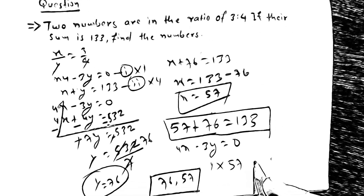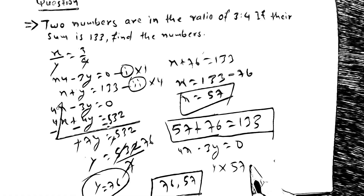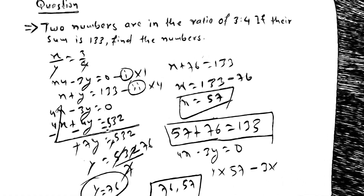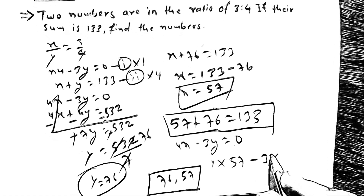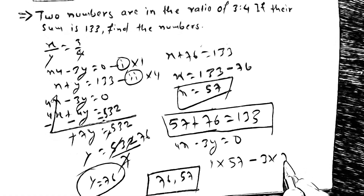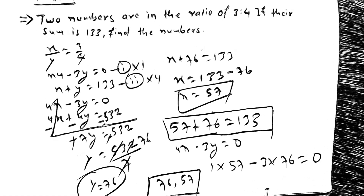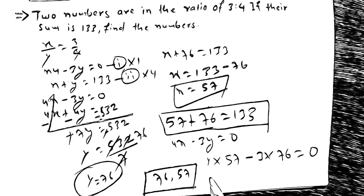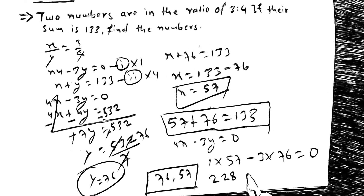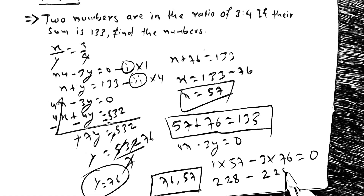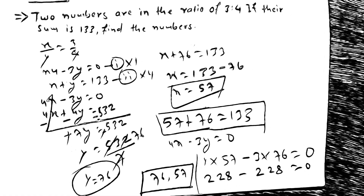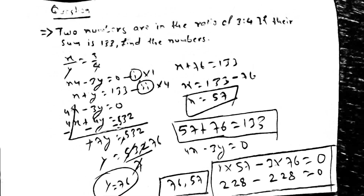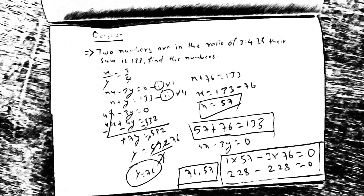57 minus 3 into y is equal to 76, is equal to 0. Multiply: 228 minus 228 is equal to 0.